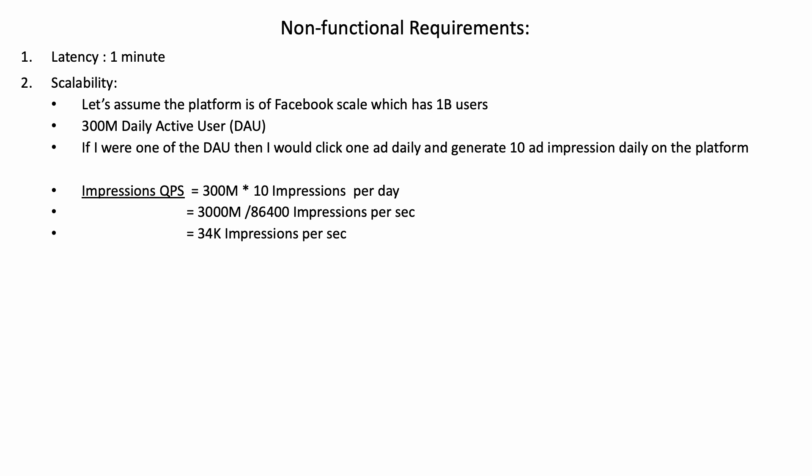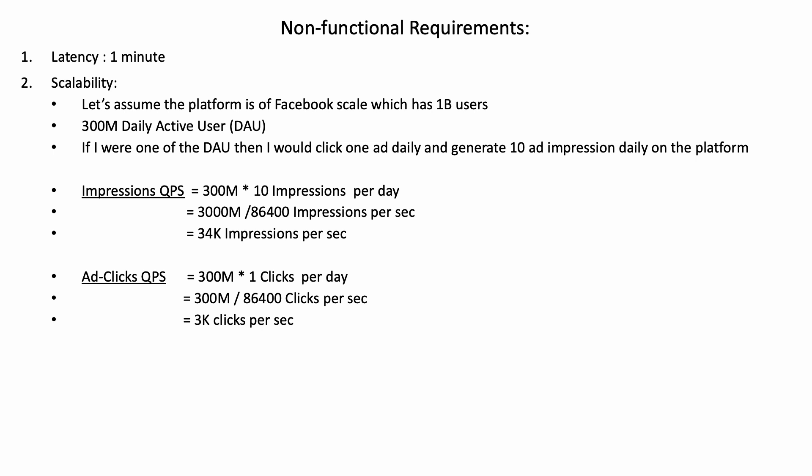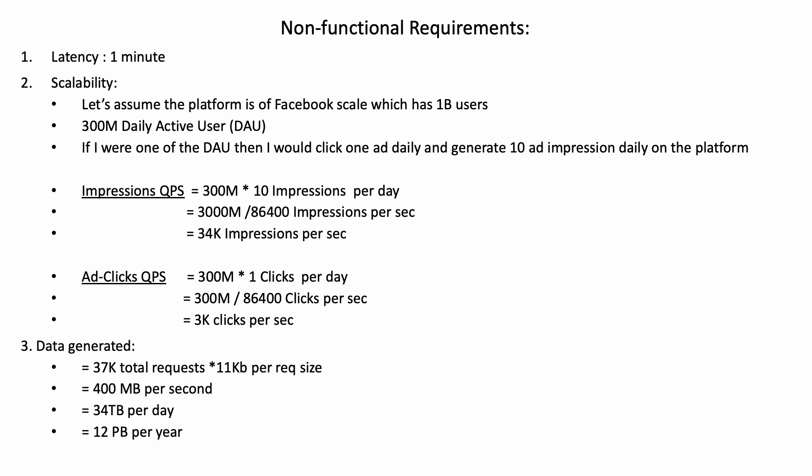If one user generates 10 impressions per day, then 300 million users would generate 3 billion impressions per day, equal to 34k impressions per second. Similarly, if one person generates 1 click per day, then 300 million daily active users generate 300 million clicks per day, equal to 3k clicks per second. In total we will have 37k total requests per second, where each request size is about 11kb — that equals 400MB per second, 34TB per day, and 12 petabytes per year.